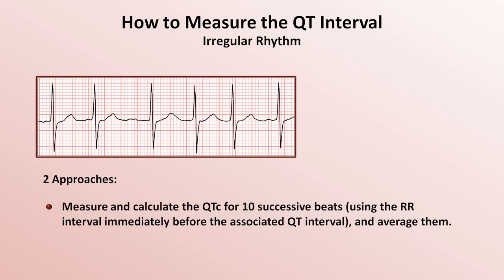The final special situation is how to measure the QT interval when the QRS complex is unusually wide. This is important because a wide QRS complex will lead to an increase in the QT interval that is not clinically relevant. Electrophysiologists often use something called the JT interval, or the JT corrected, to account for this, where the JTc is calculated analogously to the QTc. Remember that the J-point is the location where the QRS complex ends and the ST segment begins. A JTc above 330 ms is considered abnormal and of the same consequence as prolongation of the QTc.